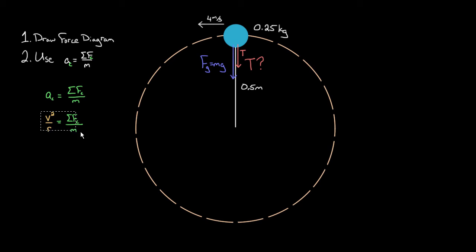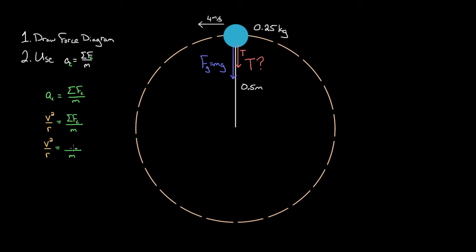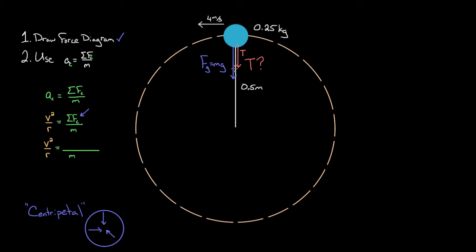The trickiest part is figuring out what to plug in for the centripetal force — what forces are acting centripetally. Look at your force diagram: there's a force of tension and a force of gravity. Should we include the force of gravity in this centripetal force calculation? We should, because we include all forces that point centripetally. 'Centripetal' just means pointing toward the center of the circle. This force of gravity does point toward the center of the circle at the top, so it is contributing to the centripetal force — it's one of the forces causing this ball to go in a circle.